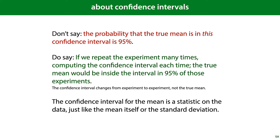What jumps around is our confidence interval based on our sampled estimates. So we should say that if we repeat the experiment many times, computing the confidence interval each time, the true mean would be inside the interval in 95% of those experiments. What changes from experiment to experiment is the confidence interval and not the true mean. It's a statistic on the data, just like the mean or like the standard deviation.